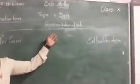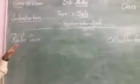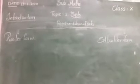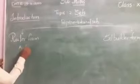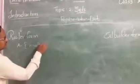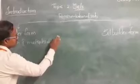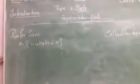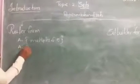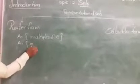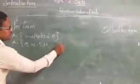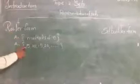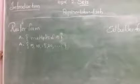Representation of sets: there are mainly two types used to represent a set. For example, if I take one set — A is the set of multiples of 5. In roster form, what we will do is write the multiples of 5: 5, 10, 15, 20, and so on. Writing all the elements of a set is known as roster form. The other name of roster form is list form.